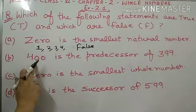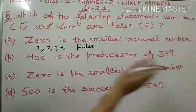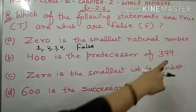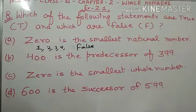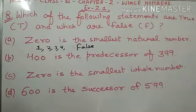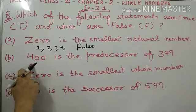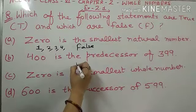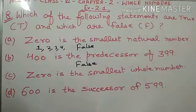Now b part: '400 is the predecessor of 399.' Predecessor ka matlab hoota hai pehle wala number. Ab 399 se pehle jo number aata hai, woh pata chalega jab aap 399 mein se one minus kar denge, toh aajayega 398. Toh 399 ka predecessor toh 398 hoota hai. But yahaan pe likha hai 400. Toh that means yhe statement bhi false hai.